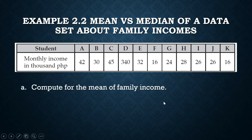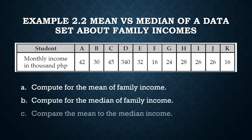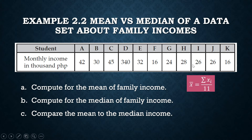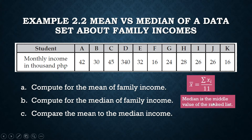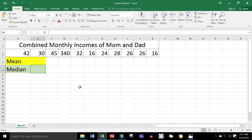So what shall we do? Compute for the mean of family income, compute for the median, and compare the mean to the median income. To get the mean, we sum all the incomes and divide by 11 since the size of our data set is 11. To get the median, we sort in ascending order and find the middle value. We shall use Excel to find the mean and median, as Excel has a function for this.